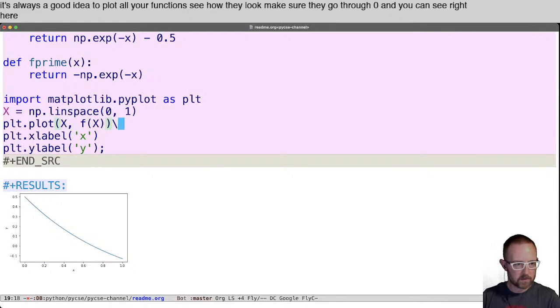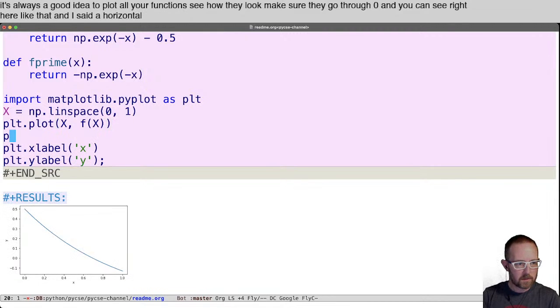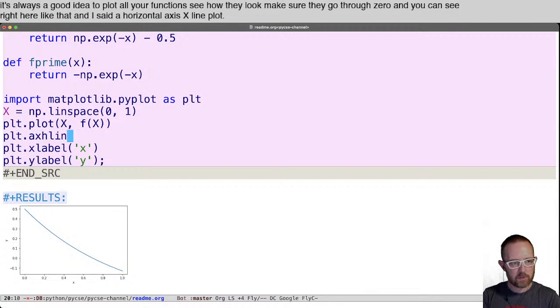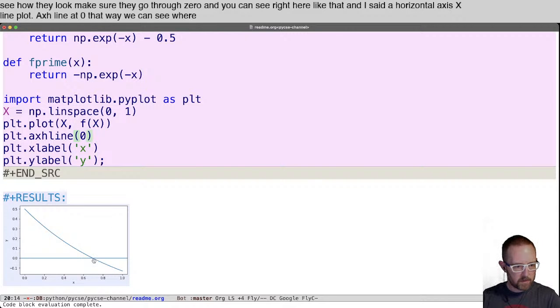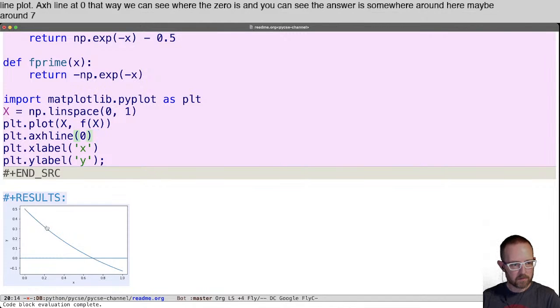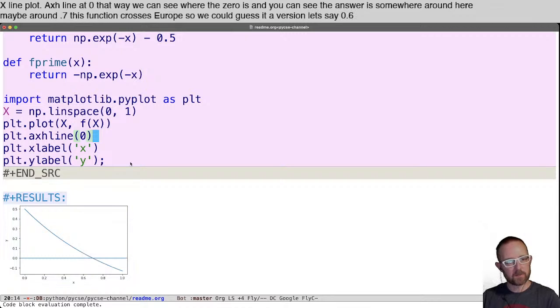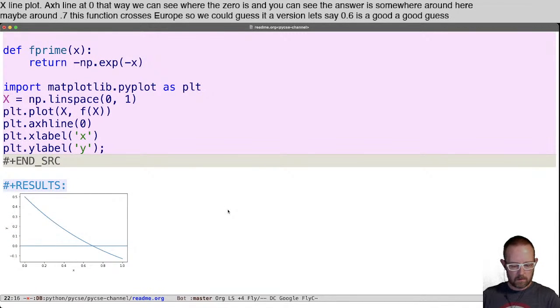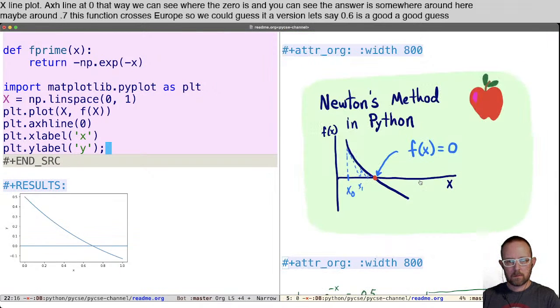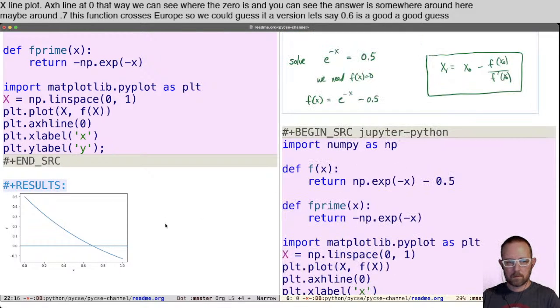That way we can see where the zero is. And you can see the answer is somewhere around here. Maybe around 0.7. This function crosses zero. So we could guess a version. Let's say 0.6 is a good guess. All right.